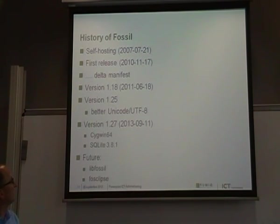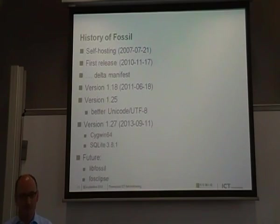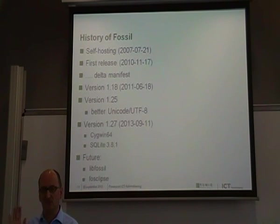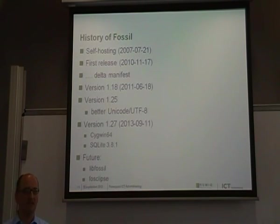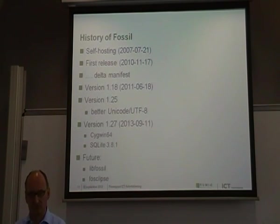One thing I later did is better Unicode UTF-8 support. The main developers normally work on Unix, but on Windows there were some problems. The Windows API normally uses the Unicode API, so you don't have to worry about Windows code pages. I built in Fossil that now on Windows you don't have to worry anymore — you can have non-ASCII characters inside your commit message or anything. That was also a problem with past versions of Fossil.